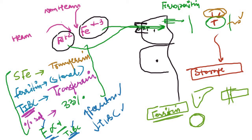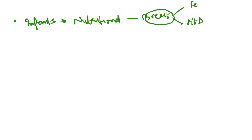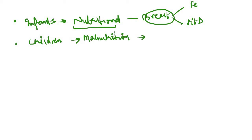That was the first part — the normal physiology and metabolism of iron. Next, what are the causes of iron deficiency anemia? There is a nice age-specific chart for this. In infants, the most common cause is nutritional, because infants are primarily breastfed and breast milk is deficient in two things: iron and vitamin D. In children, malnutrition prevails, leading to decreased iron intake and iron deficiency anemia.